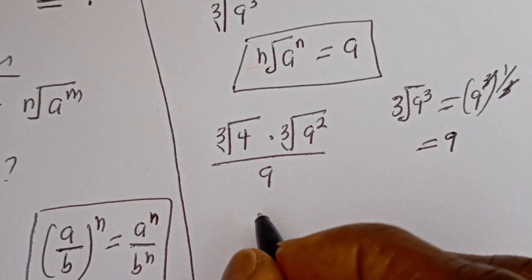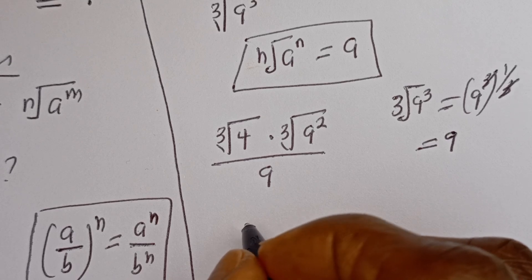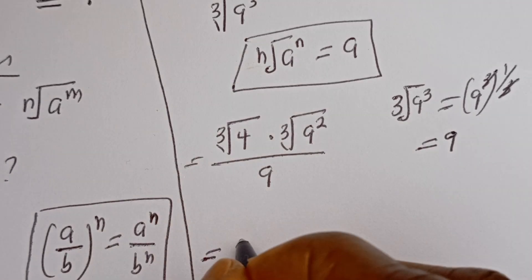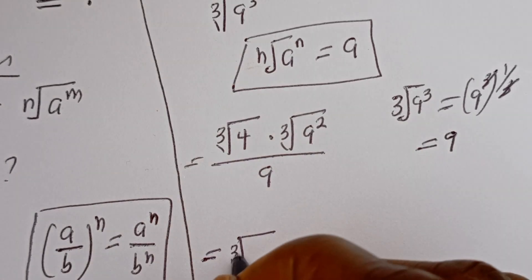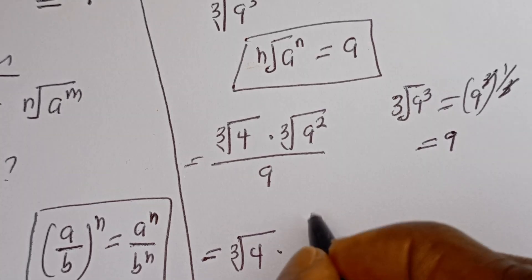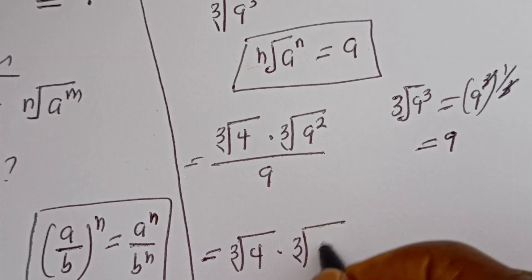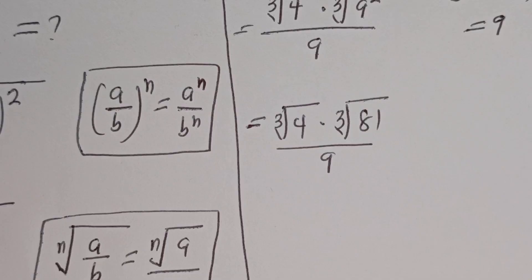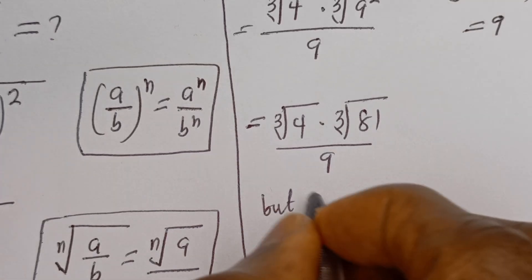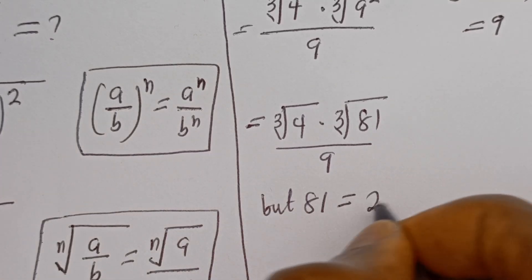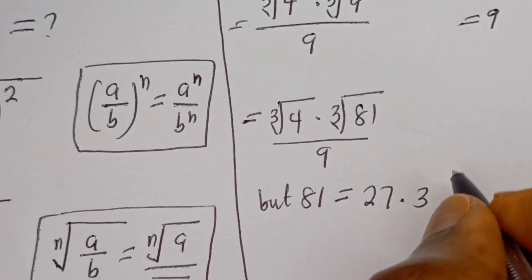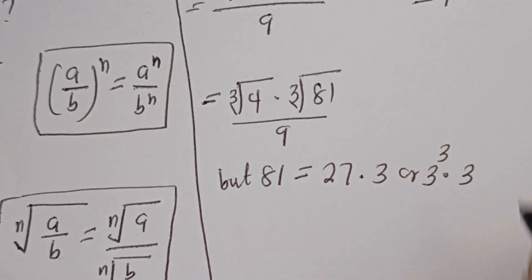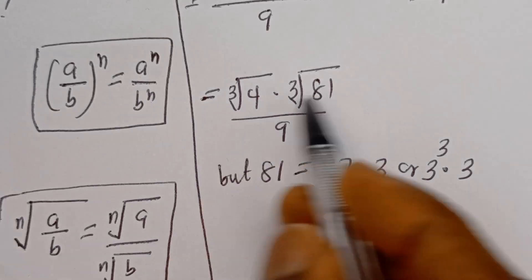Then we have the cube root of 4 multiplied by the cube root of 9 squared — which is 81 — divided by 9. But 81 is equal to 27 multiplied by 3, or 3 to the power of 3, multiplied by 3.